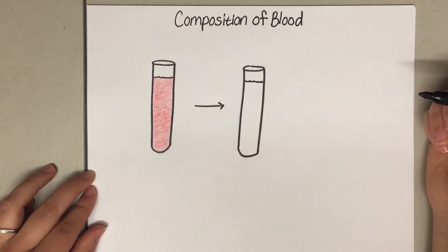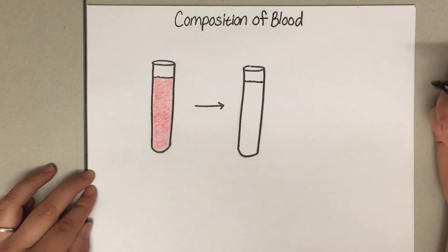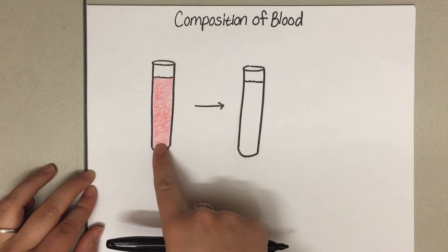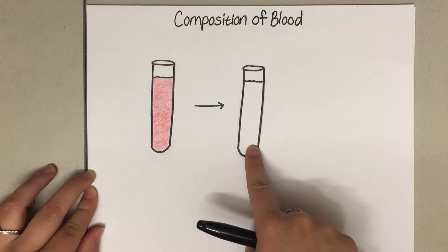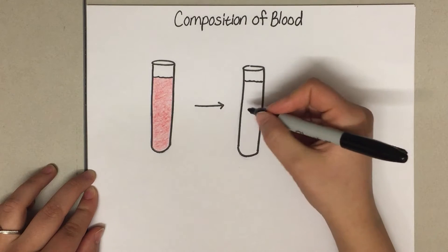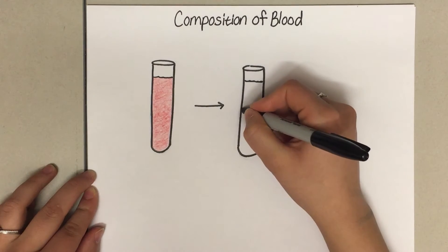Today we'll be talking about the composition of blood. You can see this easiest when you take a tube of blood and centrifuge it down. When you centrifuge it, three distinct layers will appear.